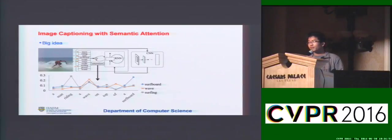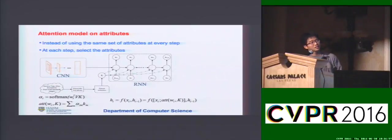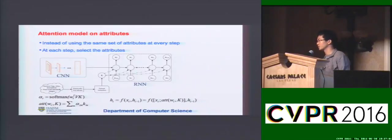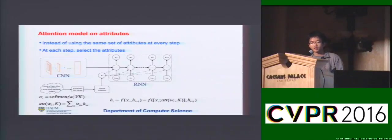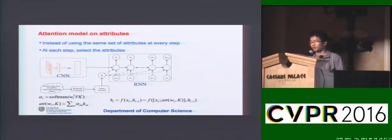The main question is how you are going to use these generated visual attributes. Intuitively, you think that at each time stamp we should focus on different visual attributes. In our implementation, we use the attention model to select relevant words at each time stamp when you try to predict the next word.